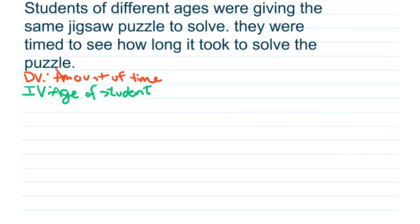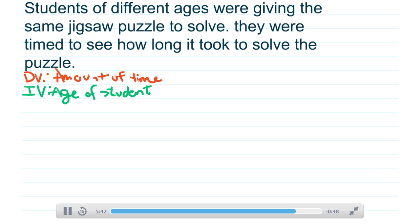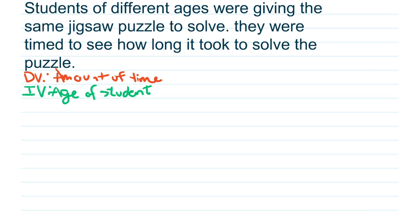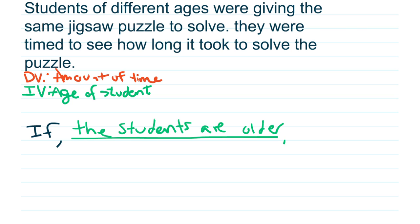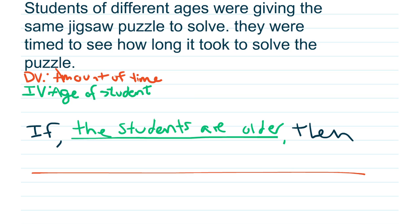If you want to get some practice, pause the video and try writing a hypothesis for the puzzle situation. Remember that the independent variable was the age of the student, and he was measuring the amount of time it took to solve the puzzle. So our hypothesis could be — remember it starts with 'if' — if the students are older, then they can solve the puzzle quicker.